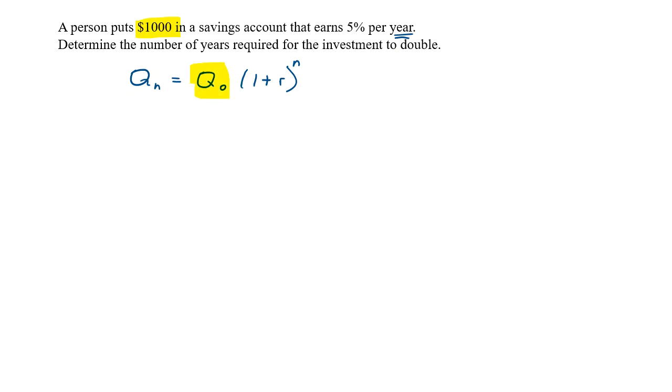What other number are we given? We are given 5% per year. Where's that gonna go? Good job, that's gonna go here as a decimal. So let's write it out.